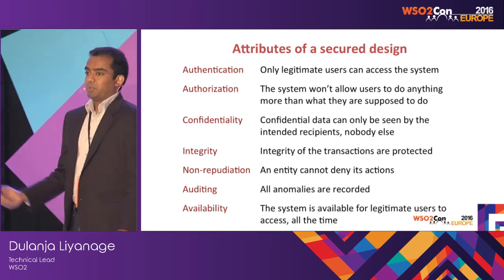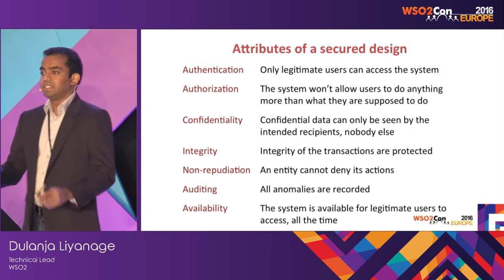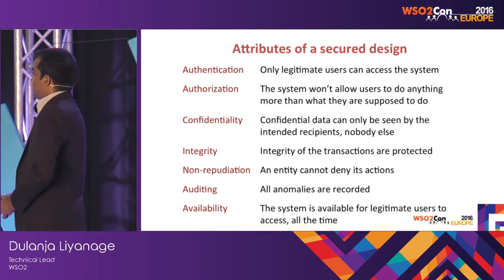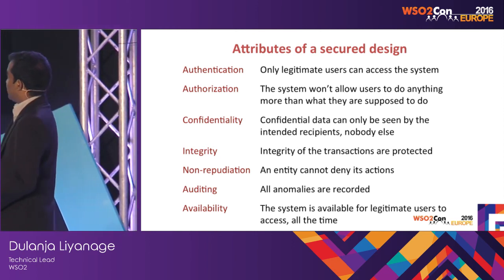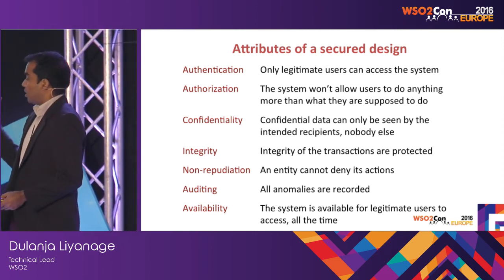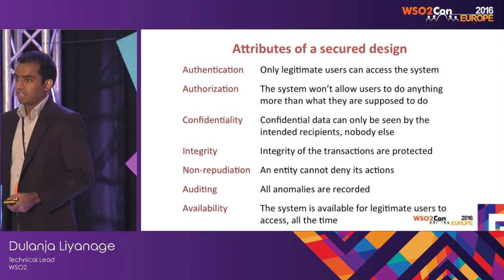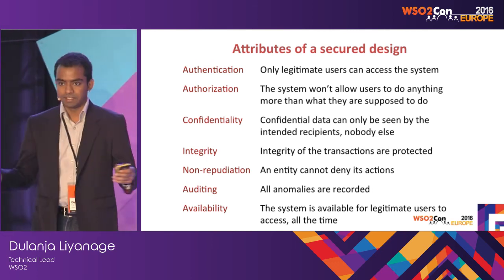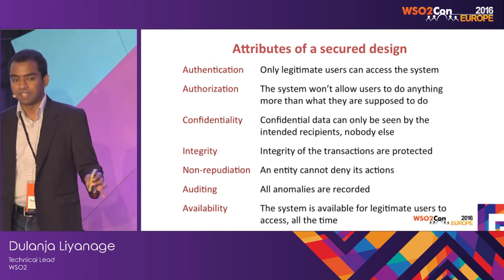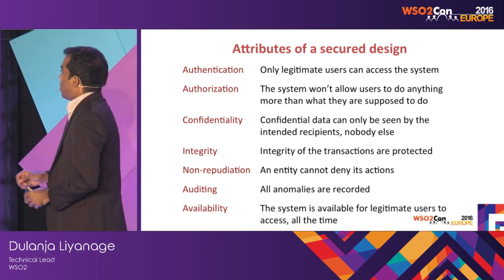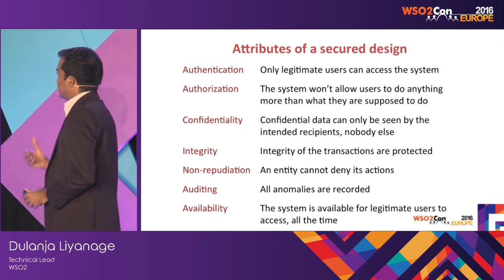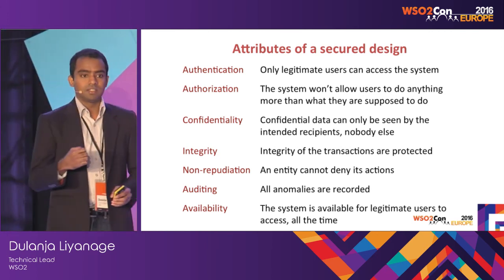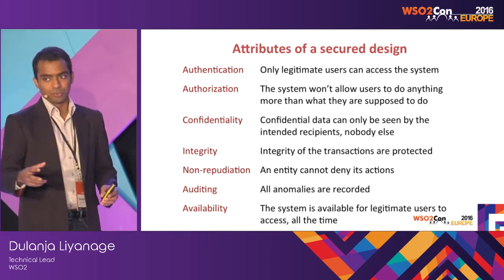These are the attributes of any secure design, not only API. There are seven attributes. Authentication — only legitimate users can access the system, no one else. Authorization — the system won't allow users to do anything more than what they are supposed to or allowed to do.